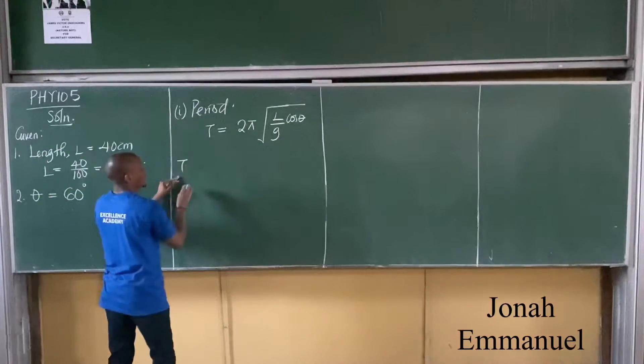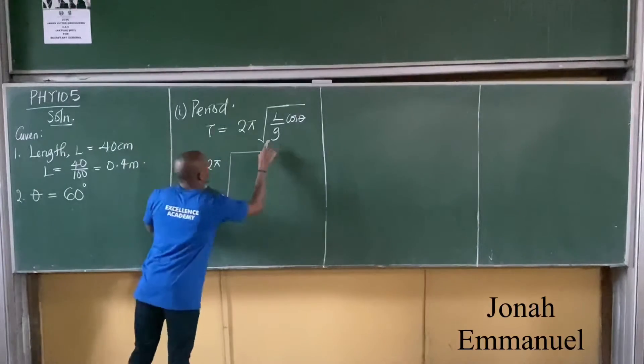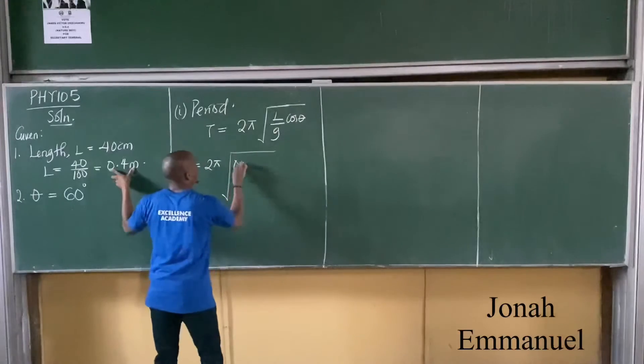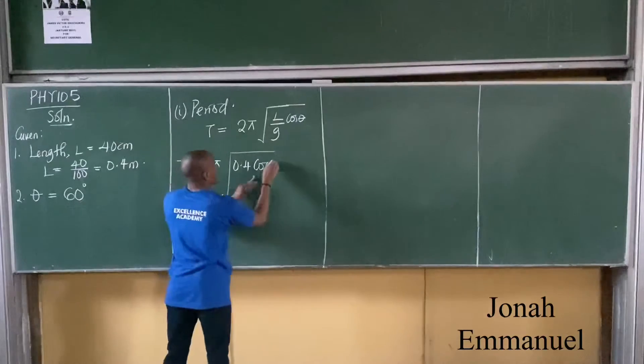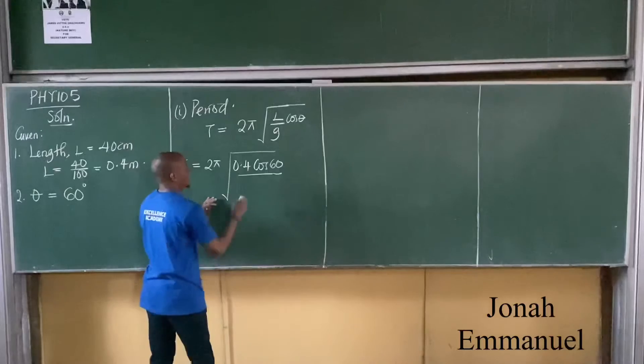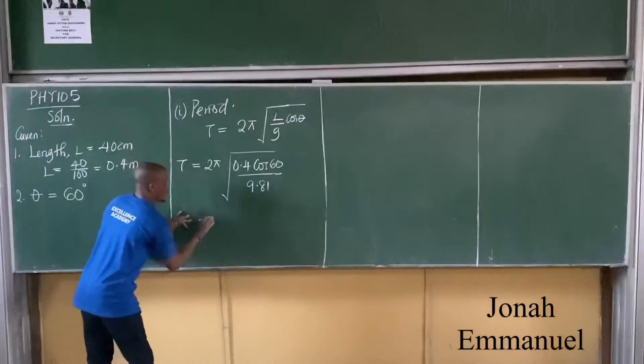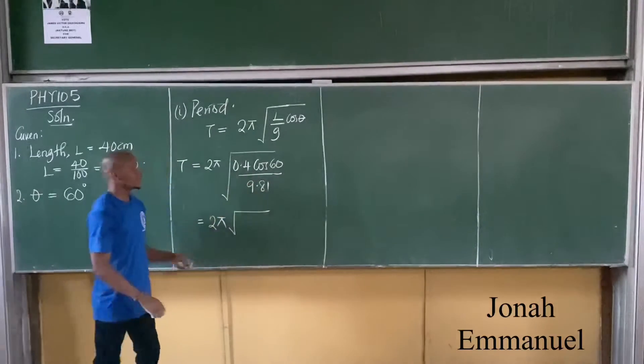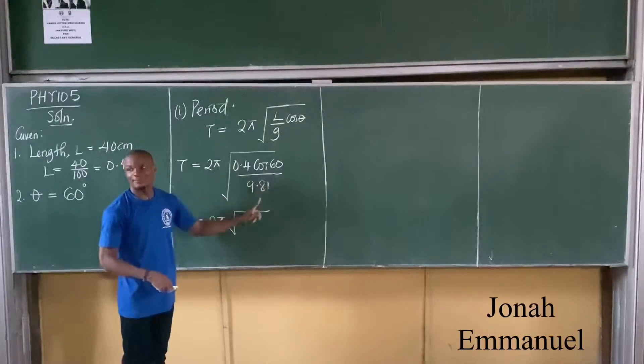Substitute values. I will have that period T is equal to 2π square root of L, which is 0.4, cos theta 60 degrees, all over G. Let's use G as 9.8.